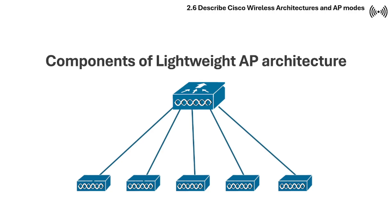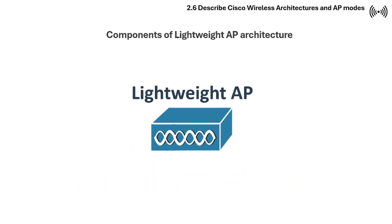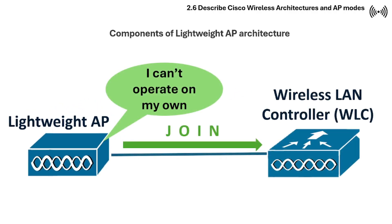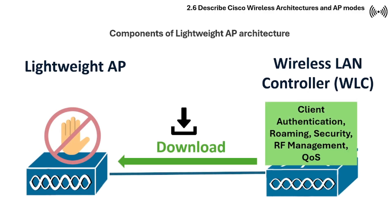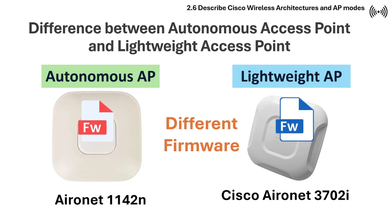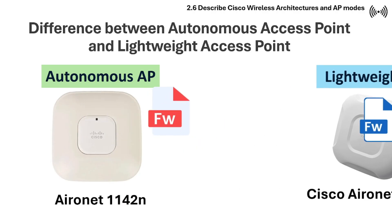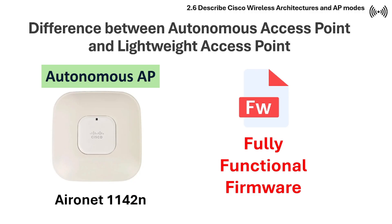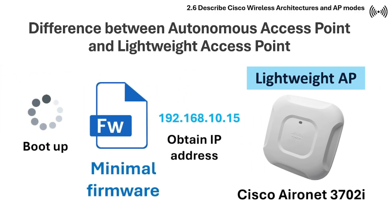The first component of the lightweight AP architecture is the lightweight access point, or LAP. A LAP is a type of wireless access point that relies on a central wireless LAN controller for its configuration, management, and control functions. They are deployed with a zero-touch approach where they automatically discover and join a WLC, downloading their configuration from the controller. Autonomous APs and lightweight APs may share the same underlying hardware, but they run different firmware. The autonomous AP has fully functional firmware with all control capabilities, while a lightweight AP has minimal firmware that allows the AP to boot up, obtain an IP address, and communicate with a WLC to download the latest controller-based firmware.